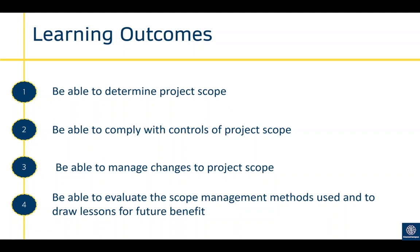The second outcome is being able to comply with the controls of project scope. That is the project delivery phase where you're actually complying with the plan that's been baselined and you've produced evidence for outcome one.